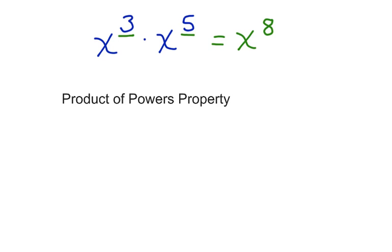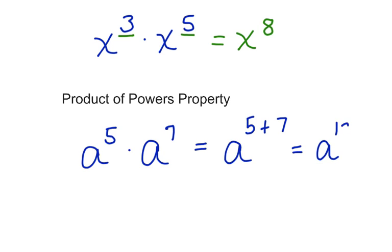This is an example of the product of power, which says that for real numbers, when you multiply values with exponents, you add the value of the exponents. Let's take a look at another one. We have a to the fifth times a to the seventh. We're going to add these exponents. 5 plus 7, which equals a to the twelfth. This is our answer.